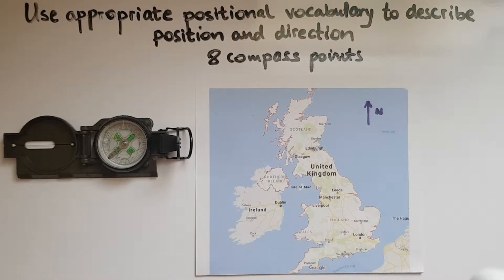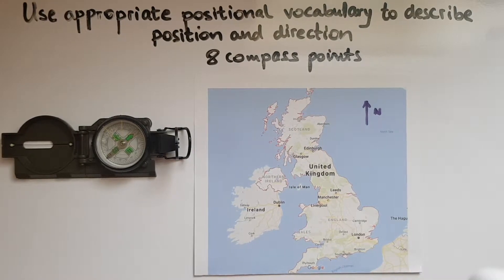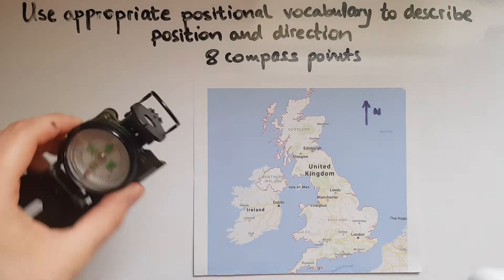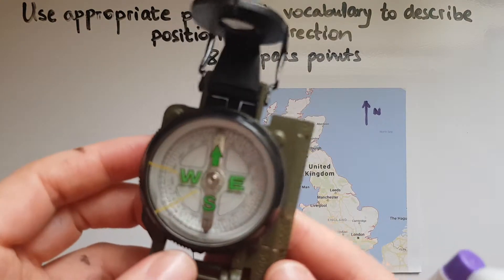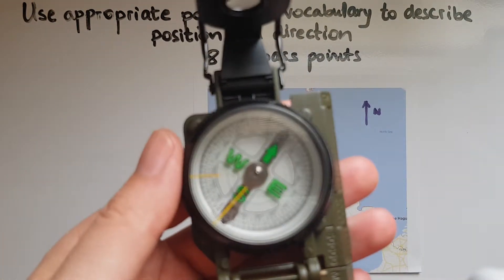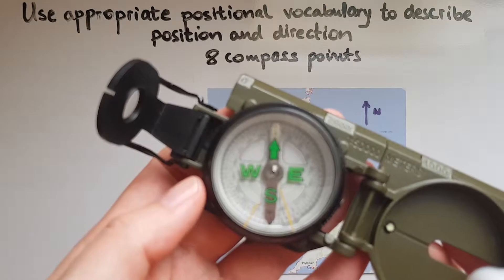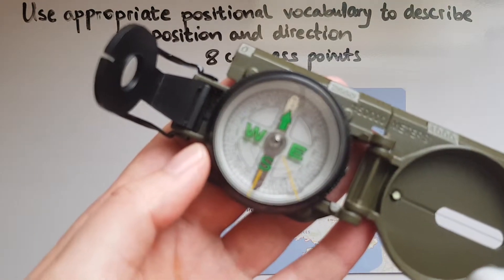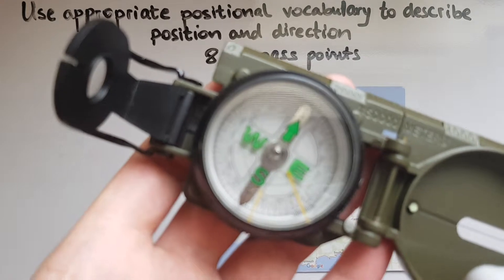In this video we'll learn to use appropriate positional vocabulary to describe position and direction, especially the eight compass points. You've probably used a compass point in your life and there are usually four compass points, but sometimes even eight, and I'll show what these mean.